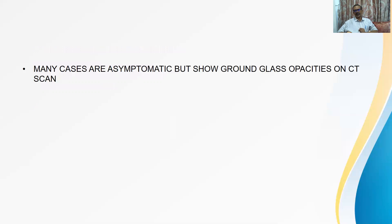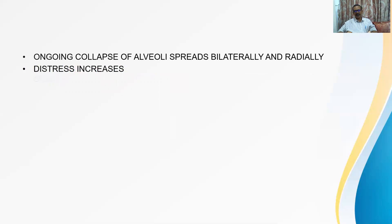Now many cases are asymptomatic but show ground glass opacities on CT scan because even if some part of lung is affected, the remaining part is doing extremely good job and blood supply is being diverted from useless part to useful part. So everything appears to be fine. Patients are asymptomatic. They are only having distress on exertion, heart rate going up after exertion, respiratory rate going up after exertion. Predominantly they are asymptomatic. Ongoing collapse of alveoli in some cases spreads bilaterally, radially and distress keeps on increasing.